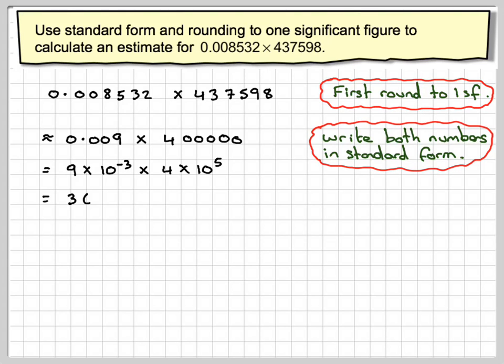OK, 9 times 4 is 36. And then we're going to have 10 to the minus 3 times 10 to the 5. Now the rule says that you must add together the indices. So that becomes times 10 to the minus 3 plus 5 from the rules of indices. So if we now do minus 3 plus 5, we're now going to get 36 times 10 squared. So that's 36 times 100.